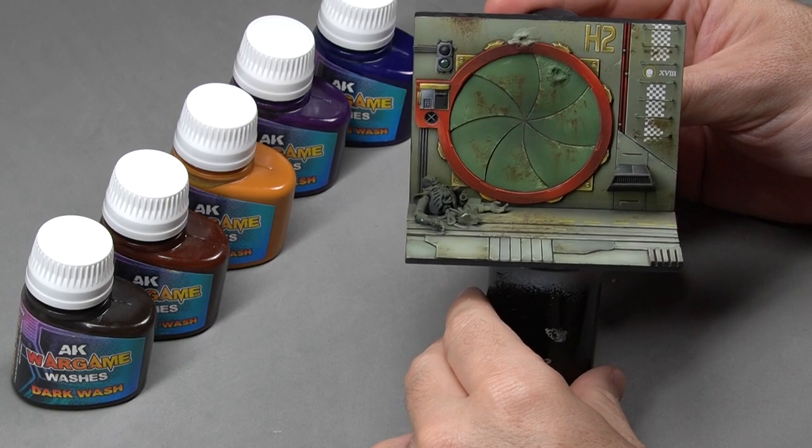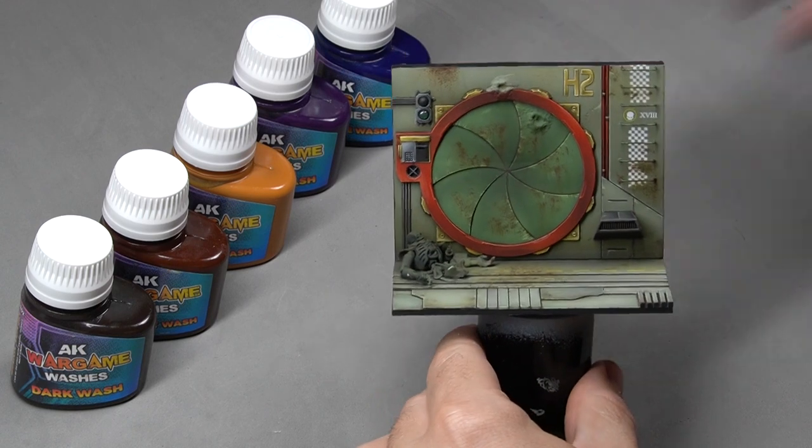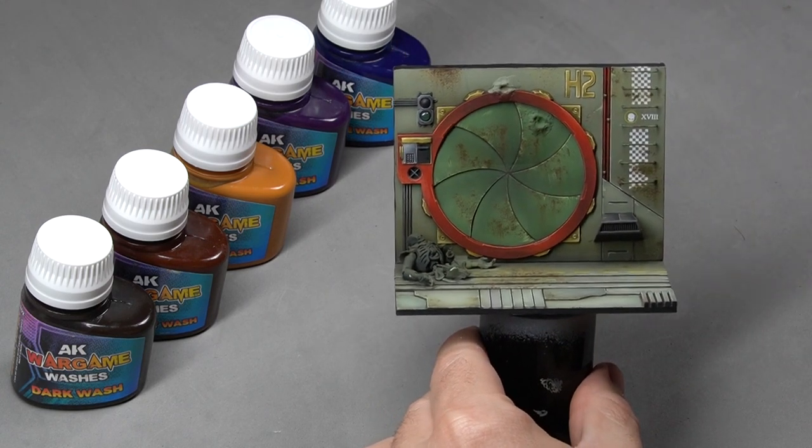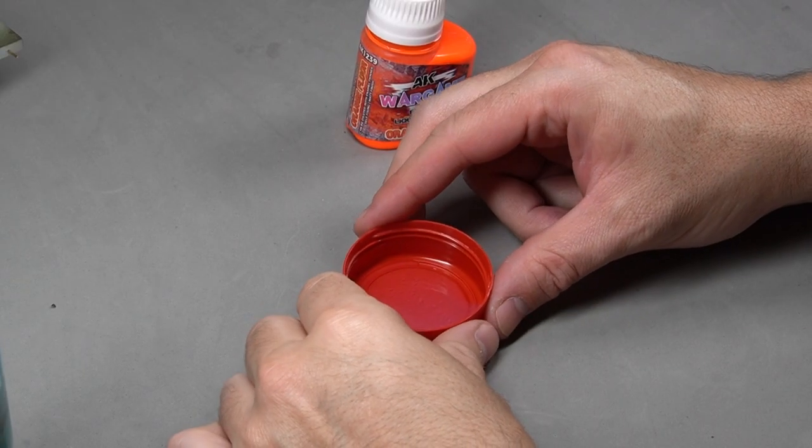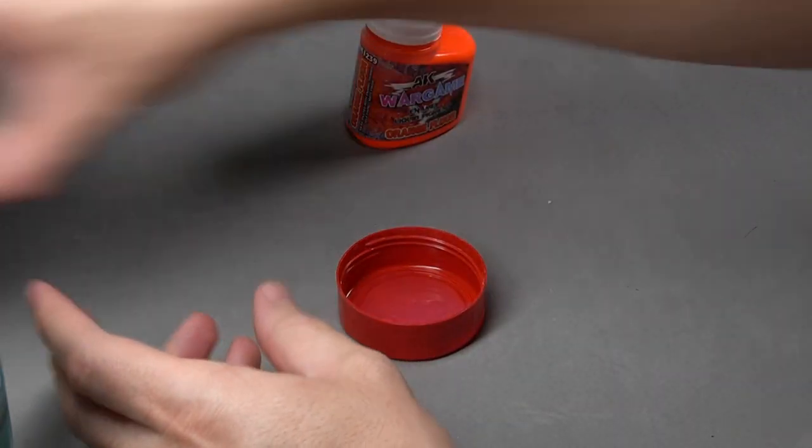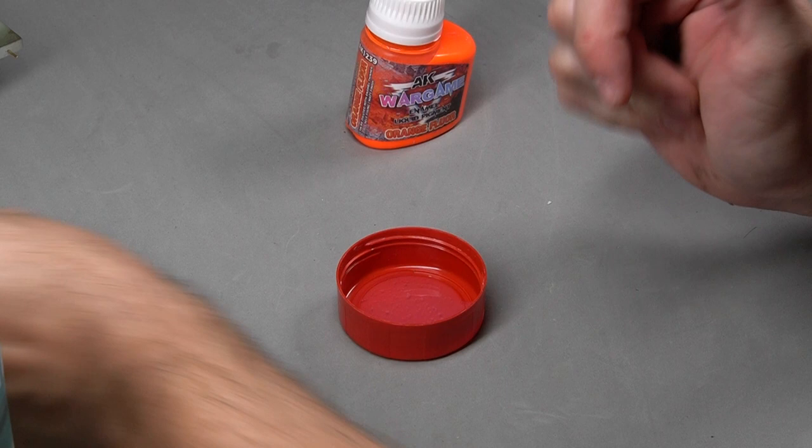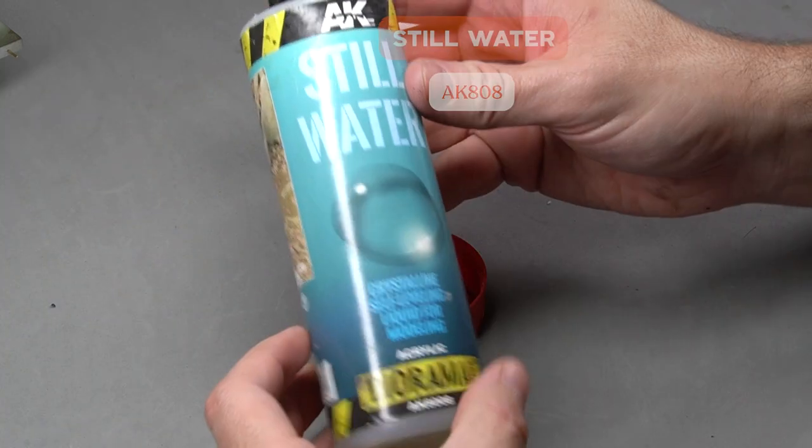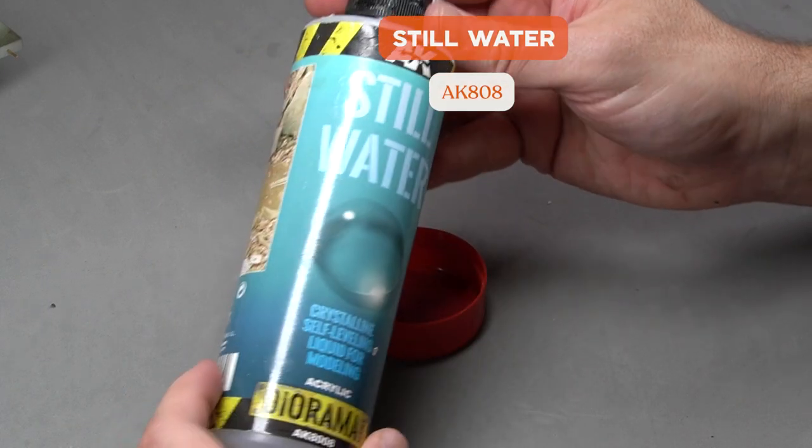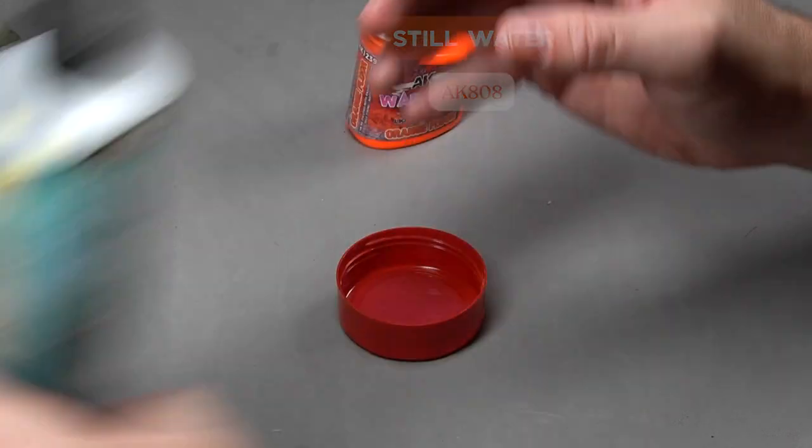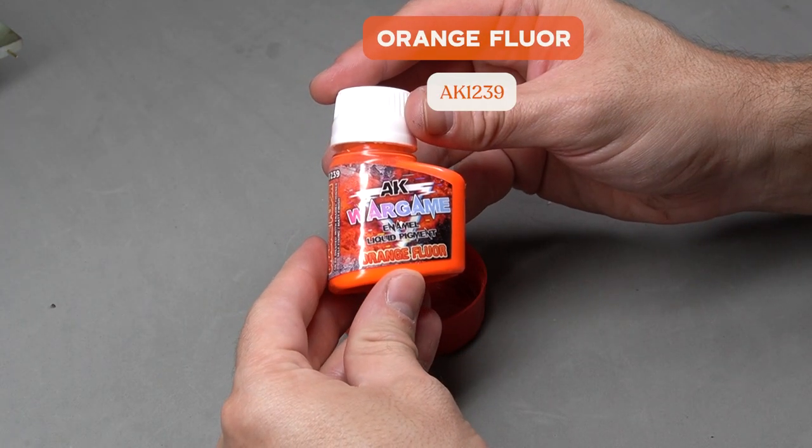Here you can see the result of the entire weathering process we applied with the washes. Now we're going to simulate the fluids belonging to the robot. You can see them on the base. We'll do this by using the still water product for creating puddles and the orange liquid pigment.